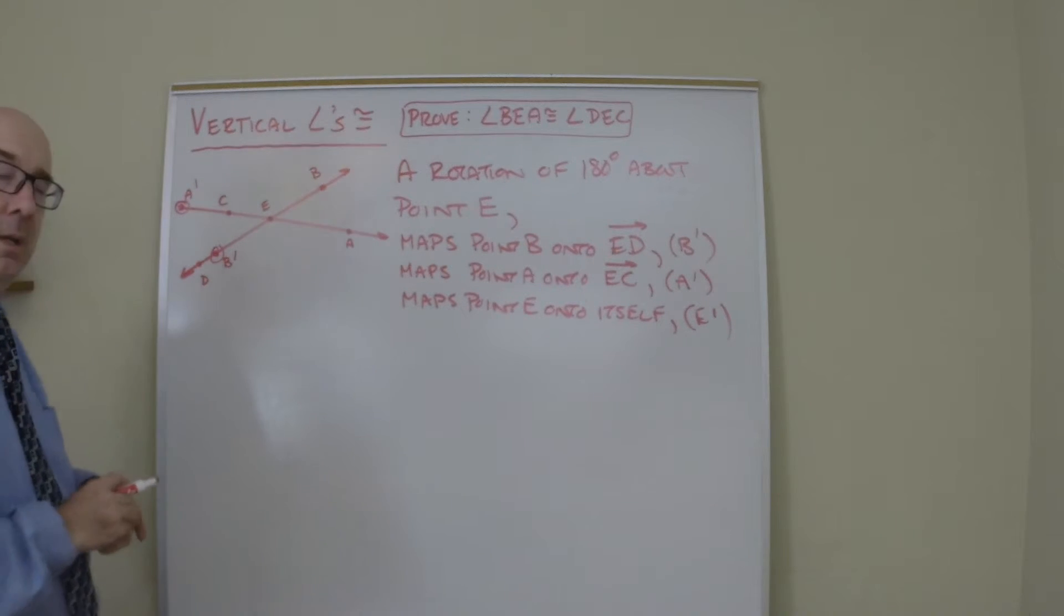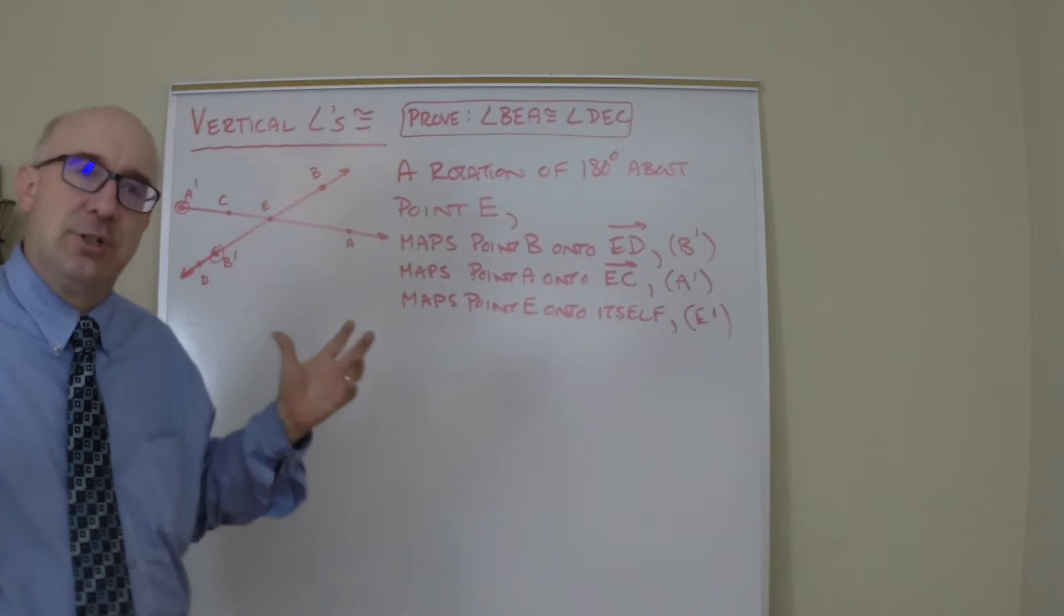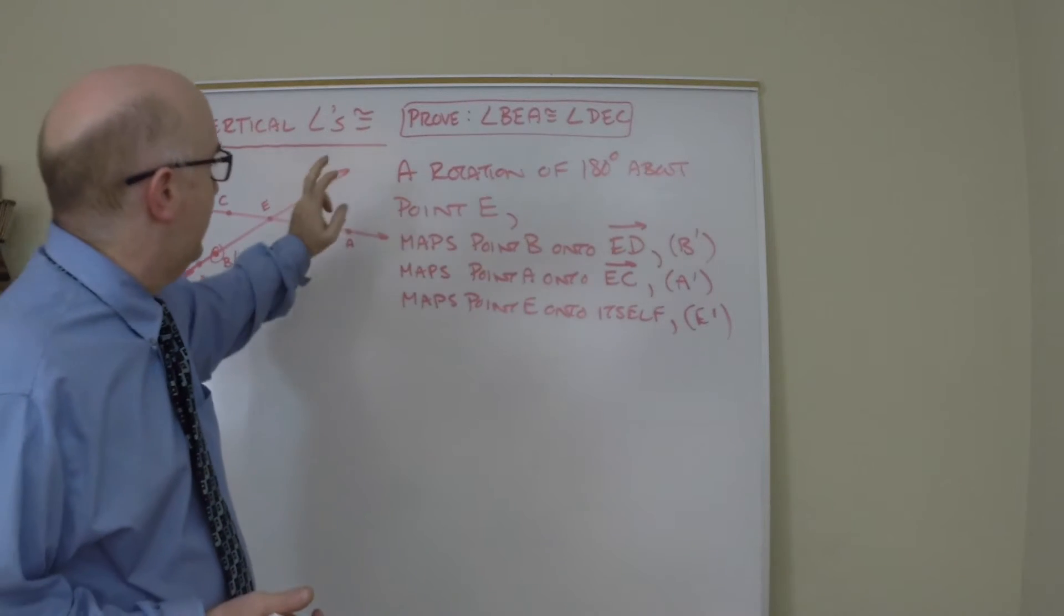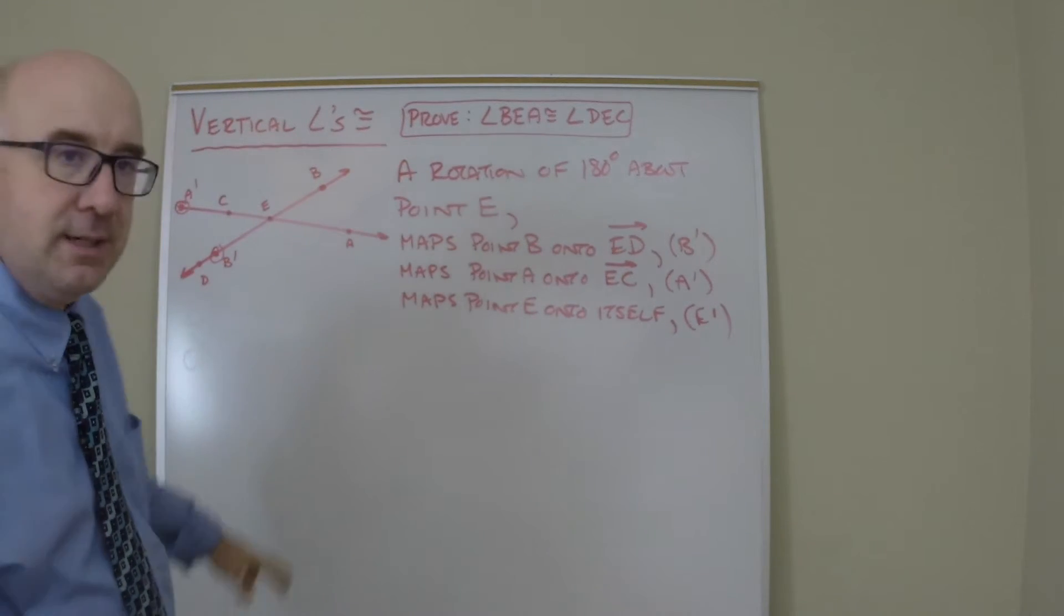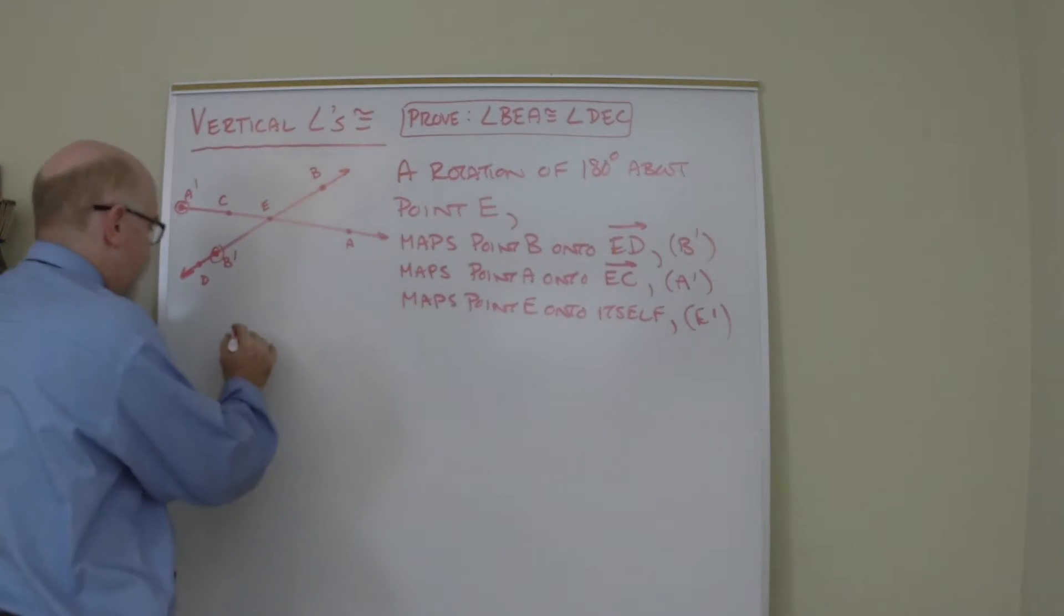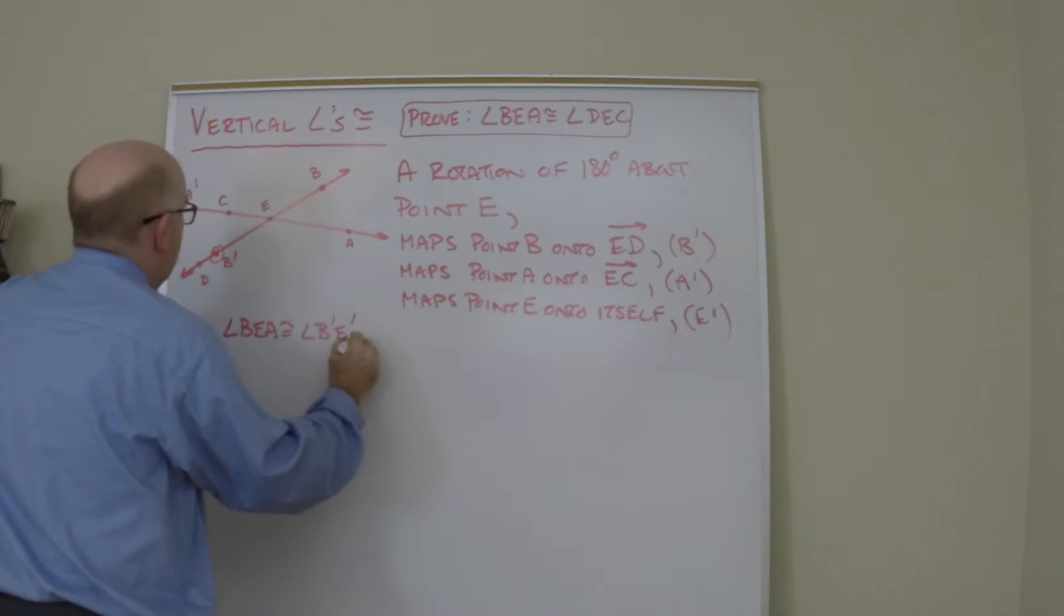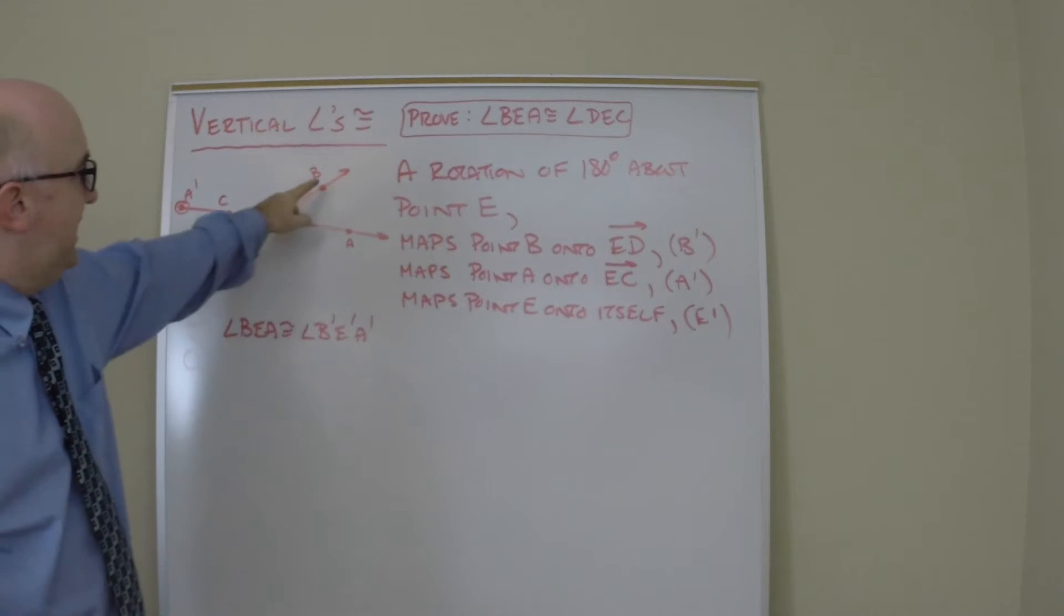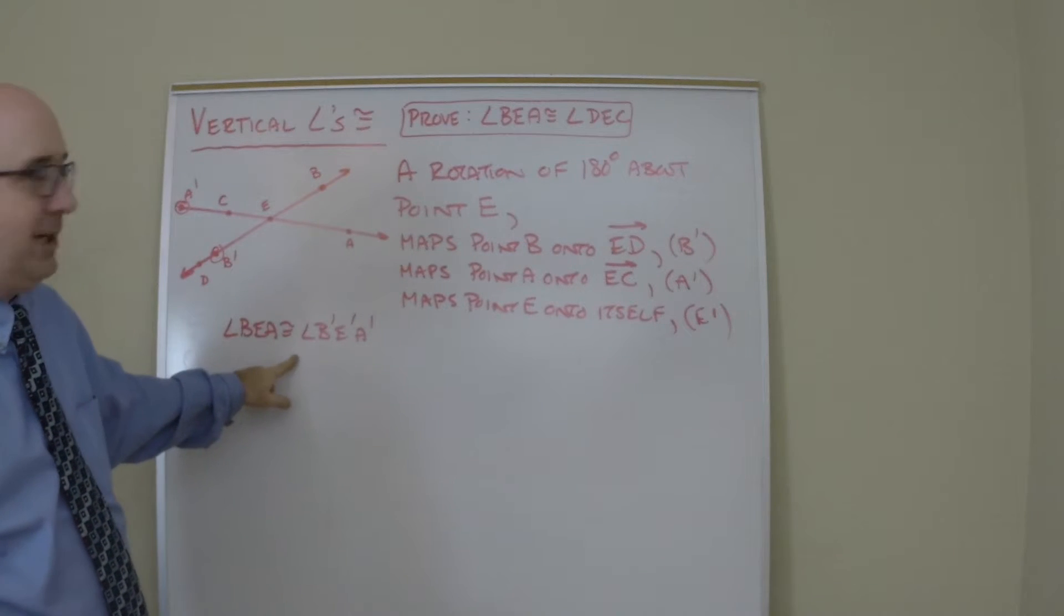Now I need to connect logically how I know that angle is equal to the one over there. Let's walk through the logic. First, angle BEA has to be congruent to the image we just created, B'E'A'. The original BEA has to equal its image always.